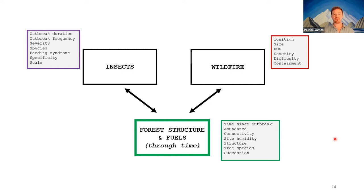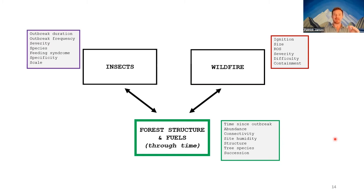Forest structure itself can be quantified in many different ways: time since outbreak, abundance, connectivity, humidity, structure, species, successional dynamics. When I consider those lists of papers with varied responses, you can pick one measure from each of these categories and every paper might produce a somewhat different result. There's a lot of variation and many ways to characterize this problem and operationalize it in a research framework.